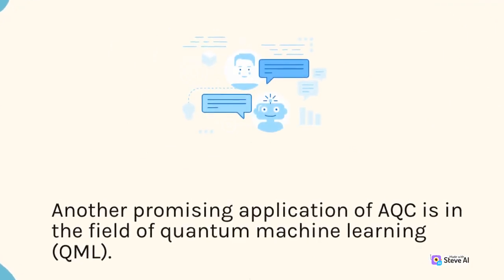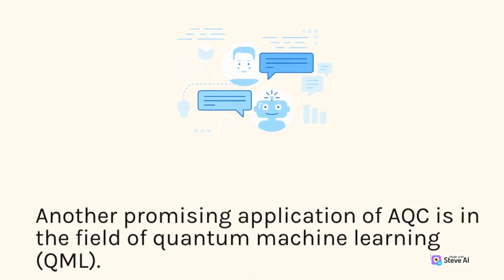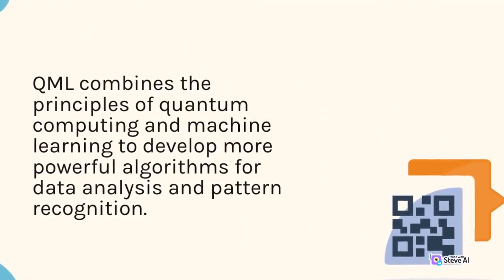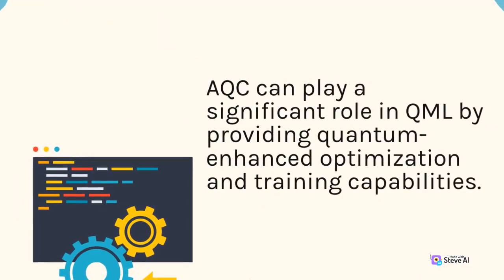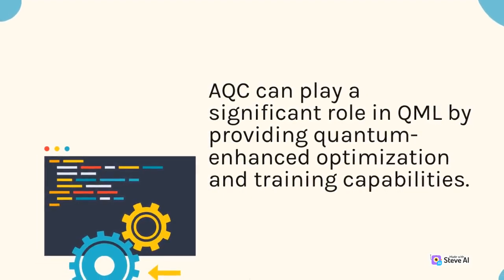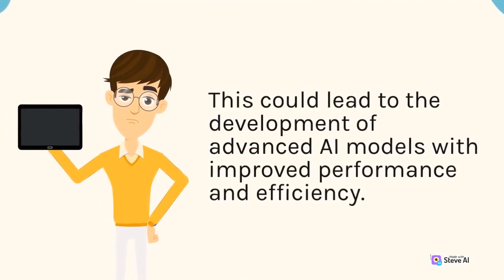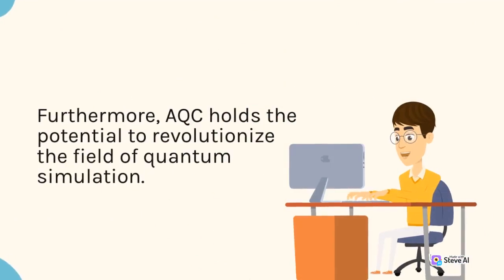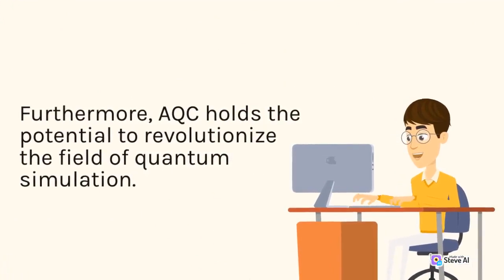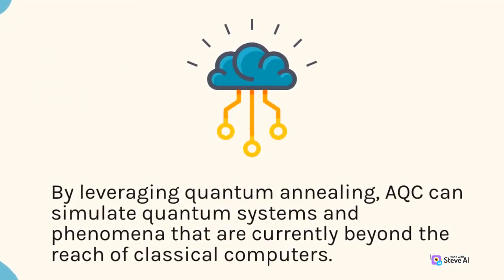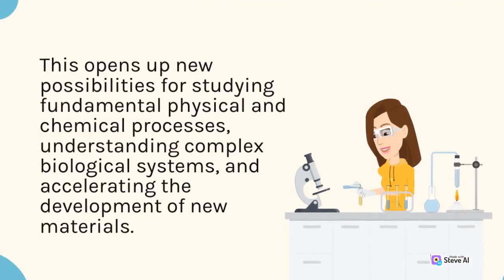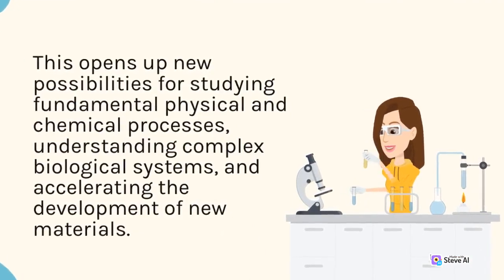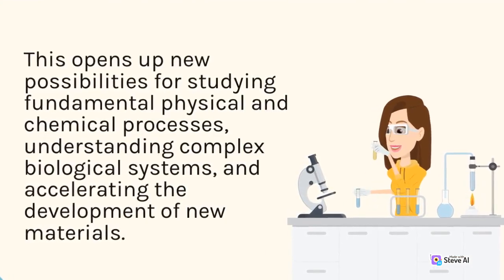Another promising application of AQC is in the field of quantum machine learning, QML. QML combines the principles of quantum computing and machine learning to develop more powerful algorithms for data analysis and pattern recognition. AQC can play a significant role in QML by providing quantum-enhanced optimization and training capabilities. This could lead to the development of advanced AI models with improved performance and efficiency. Furthermore, AQC holds the potential to revolutionize the field of quantum simulation. By leveraging quantum annealing, AQC can simulate quantum systems and phenomena that are currently beyond the reach of classical computers. This opens up new possibilities for studying fundamental physical and chemical processes, understanding complex biological systems, and accelerating the development of new materials.